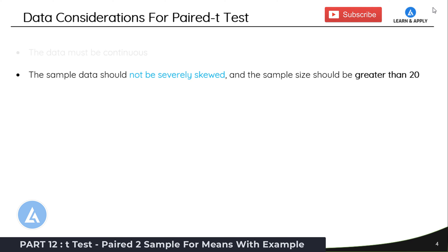Second, the sample data should not be severely skewed and the sample size should be greater than 20. This is because if the sample size is less than 20 or if the data is severely skewed, in that case we need to use non-parametric testing.